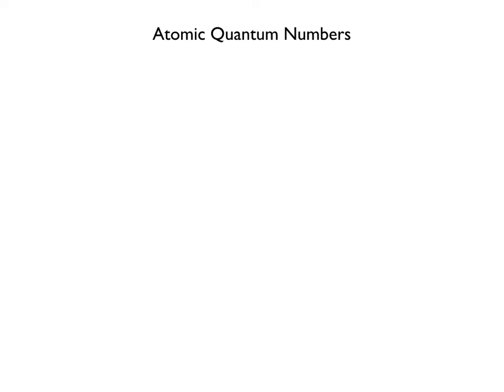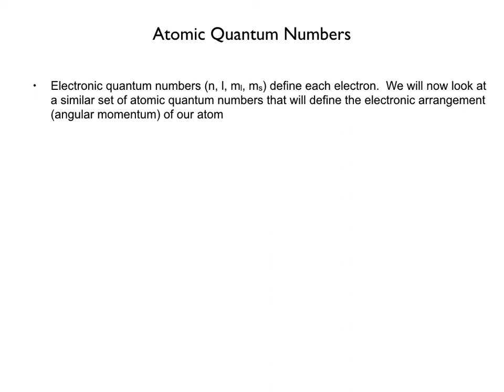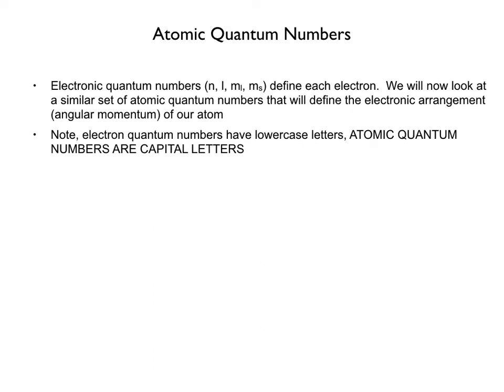Now we move from electronic quantum numbers to atomic quantum numbers. While electronic quantum numbers define a single electron, atomic quantum numbers define the electronic arrangement — the angular momentum — of the whole atom. A key point: electronic quantum numbers are always lowercase letters; atomic quantum numbers are always uppercase letters.